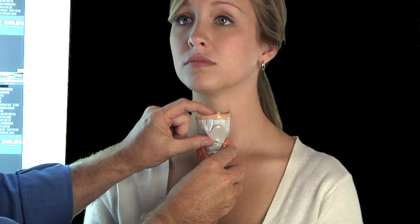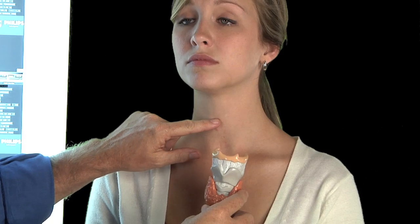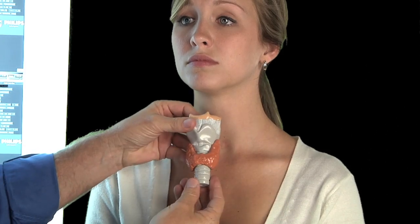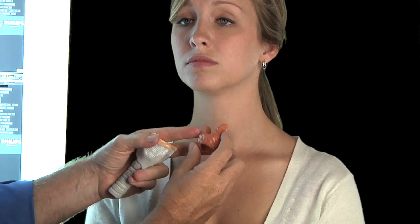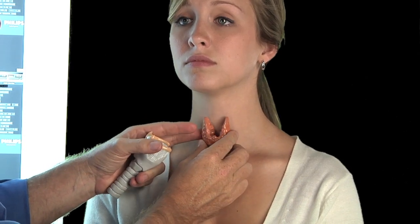This is the larynx, the voice box. This is the Adam's apple right here. This is the windpipe, the trachea. And this is the thyroid gland. We all have a thyroid gland. It looks like a butterfly. It sits right here in the neck.